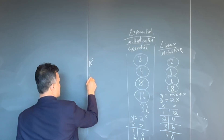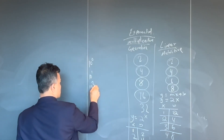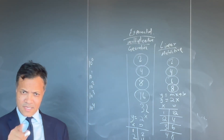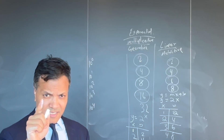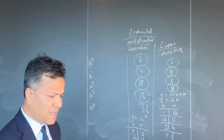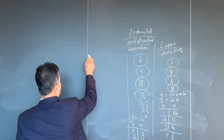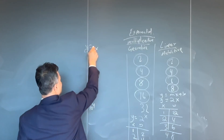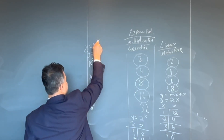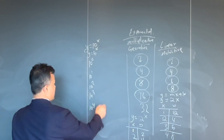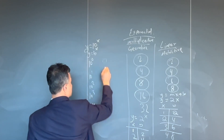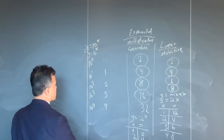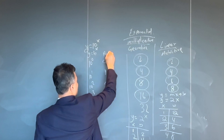Now if x equals 10 raised to 0, you get 1; x equals 10 raised to 1, you get 2; x equals 10 raised to 2, you get 3; x equals 10 raised to 3, you get 4. You can separate out the power.